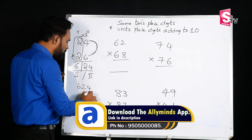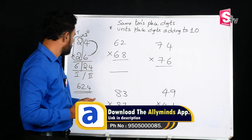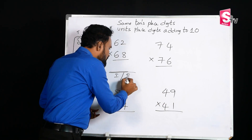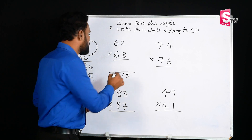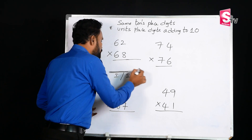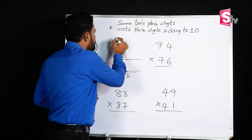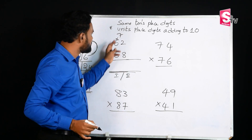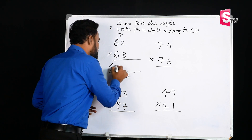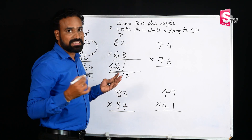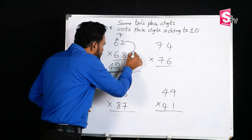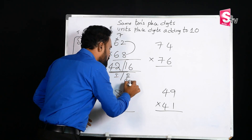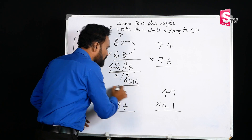The answer is made of two parts — the first part and the second part combined. For example, 7 times 6 times 7 gives us 42 as the first part of the answer. The second part is the multiplication of the two unit digits: 2 times 8 equals 16. So the final answer is 4216.